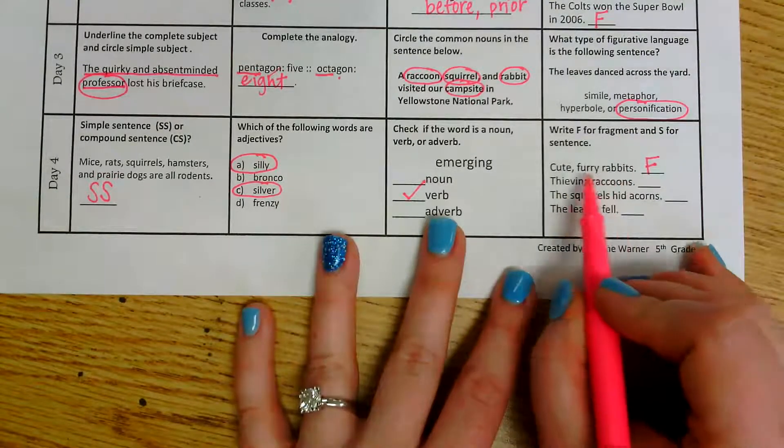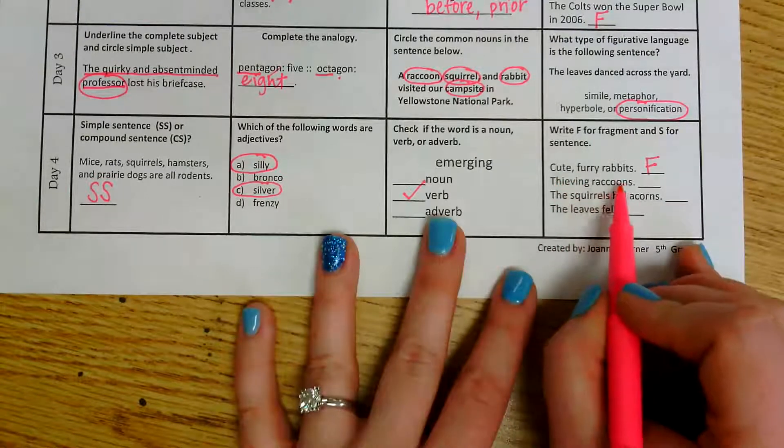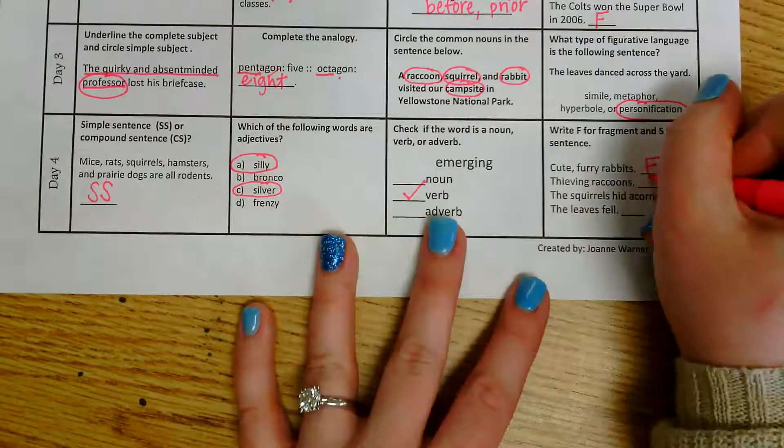Thieving raccoons. Again, I just see a subject here. I don't see what the raccoons are doing. So again, we have a fragment.